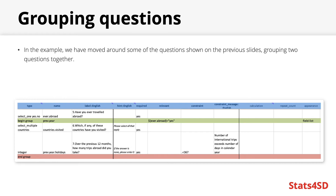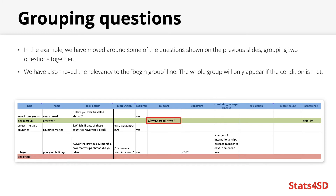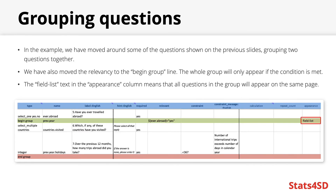In this example, we have grouped two questions together: the question concerning which countries have you visited, and how many trips one took in the previous 12 months. As both had the same relevancy — ever.abroad must equal yes — we have moved this relevancy code to the 'begin group' line, highlighted in green. Therefore the whole group of these two questions will now only appear if somebody says yes to ever travelling abroad. Additionally, in the begin group line under the appearance column I have written 'field-list', which tells ODK that every question within this group should appear on the same page when viewed on a mobile device.